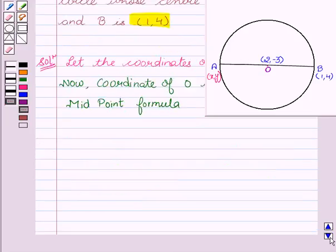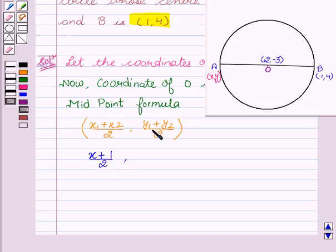That is (X1 + X2)/2 and (Y1 + Y2)/2. Now we will substitute the value of X1, X2, Y1, Y2 and get the coordinates of O. That is here X1 is X plus X2 is 1 upon 2 and Y1 is Y plus Y2 is 4 upon 2. So these are the coordinates of the point O.